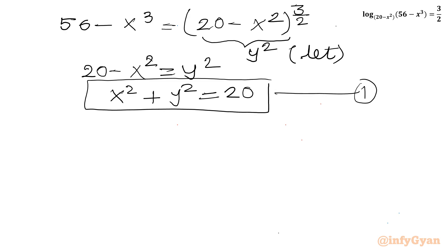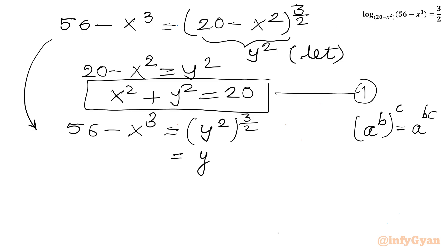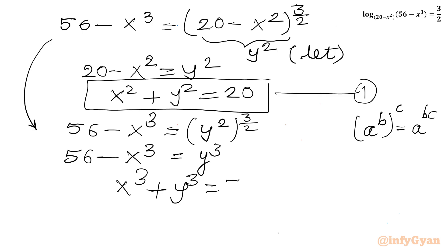After substitution, 56 minus x³ = (y²)^(3/2). Using the exponent property (a^b)^c = a^(bc), this becomes y³. So x³ + y³ = 56.